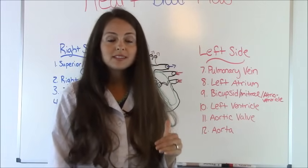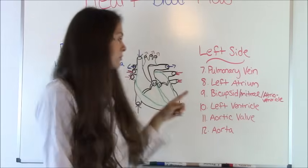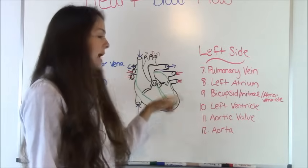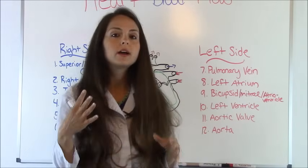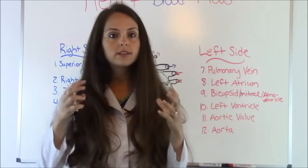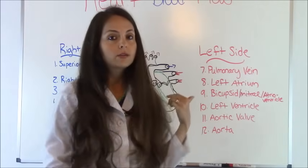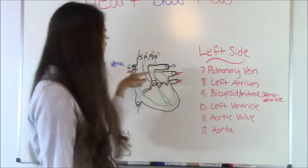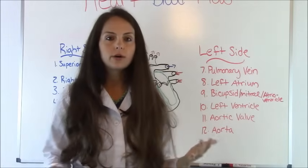Remember, the goal of the blood on the left side is to get to the body. After the ventricle contracts, it's going to shoot up through the aortic valve and then up through the aorta, which is a large artery that sends blood up through the body — to your brain and throughout your entire body.